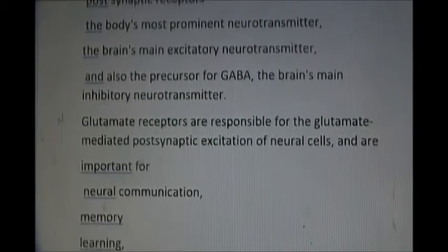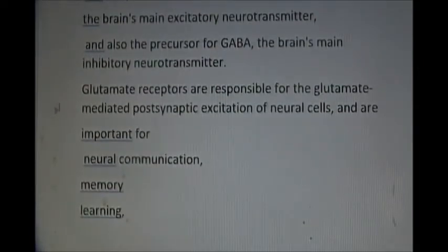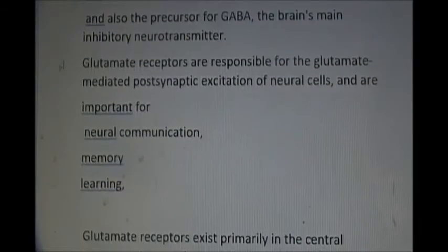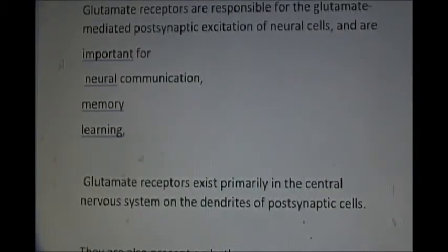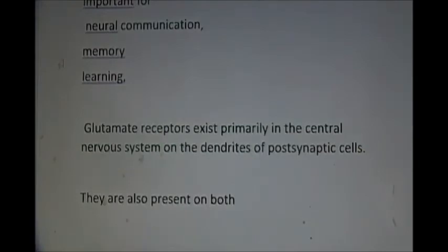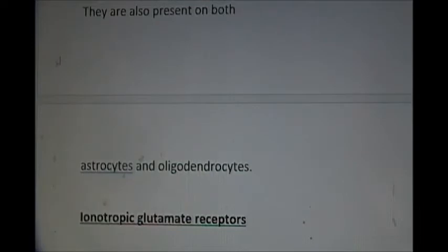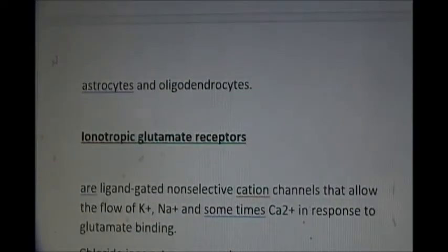Glutamate is also the precursor of GABA. GABA is the brain's main inhibitory neurotransmitter. The other main inhibitory neurotransmitter is glycine, which is mainly found in the spinal cord. Glutamate receptors are responsible for many functions and are important for neuronal communication, memory, and learning. They are found on the dendrites of post-synaptic cells but are also present on astrocytes and oligodendrocytes.